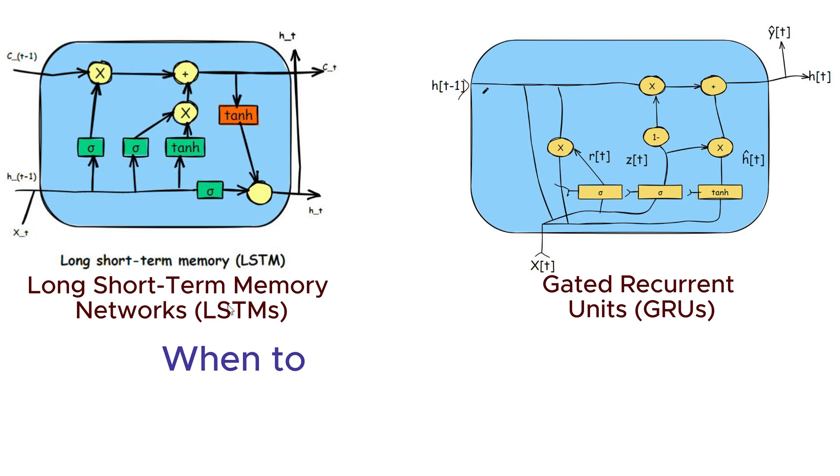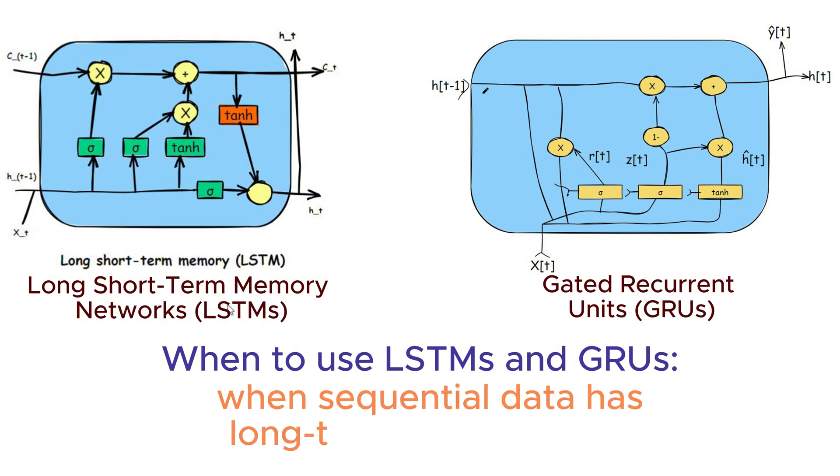When to opt for LSTMs or GRUs: We use LSTMs or GRUs when our sequential data has long-term dependencies that standard RNNs cannot capture effectively. LSTMs or GRUs provide better performance for tasks that require remembering information over extended sequences.